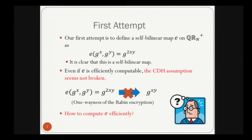This is our first attempt to construct a self-bilinear map on QR_N^+. Define E(g^x, g^y) = g^{2xy}. It is clear that this is a self-bilinear map. Moreover, even if E is efficiently computable, the CDH assumption seems not broken, unlike the prime order setting, because we cannot compute g^{xy} from g^{2xy} due to the one-wayness of Rabin encryption. However, there is a fundamental problem: we don't know how to compute E efficiently.